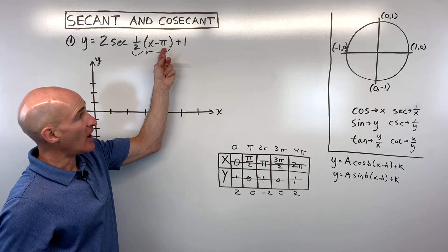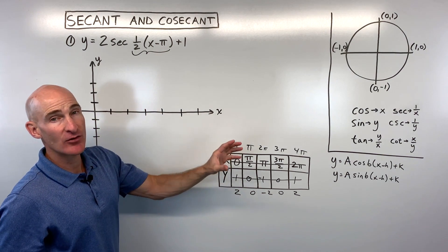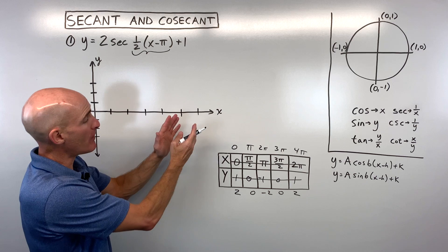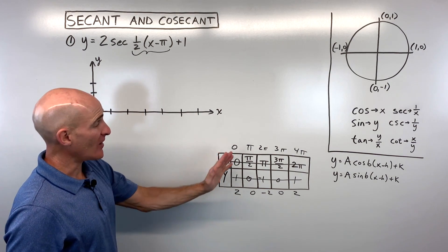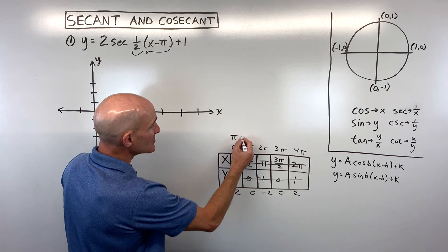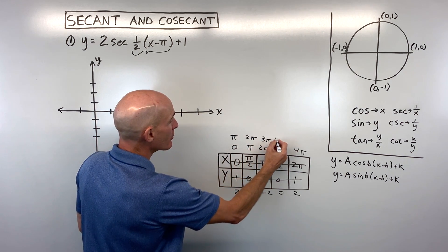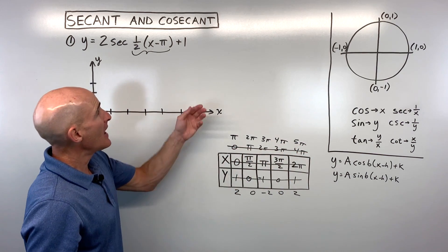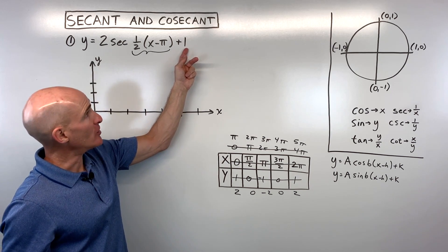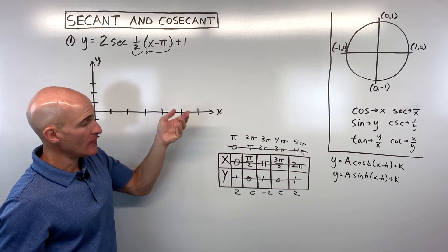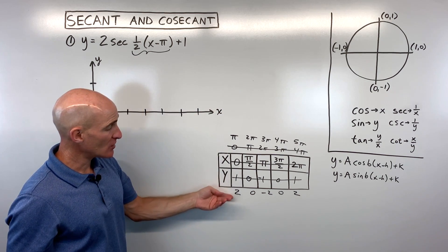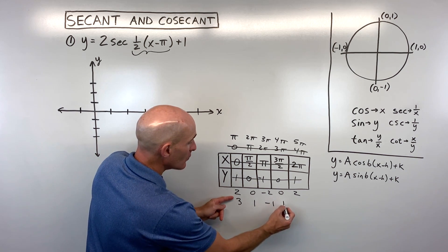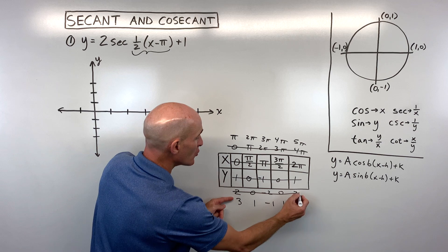The h-value is −π, which is grouped with x, so it has the opposite effect — shifting the graph right π, meaning we add π to all x-values: π, 2π, 3π, 4π, 5π. Then the k-value of +1 shifts the graph up 1, so we add 1 to all y-values: 3, 1, −1, 1, 3.